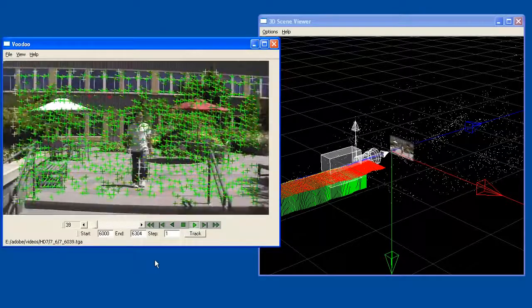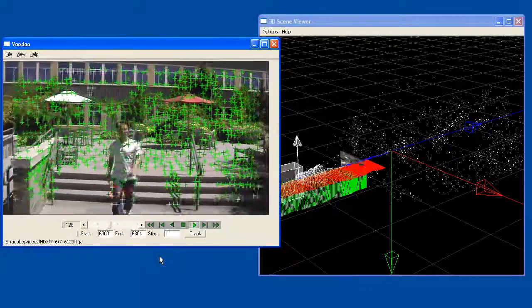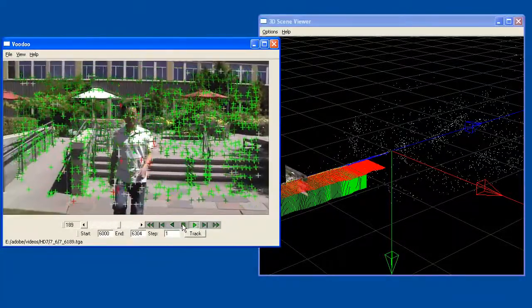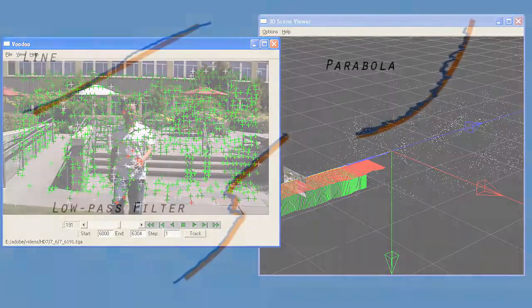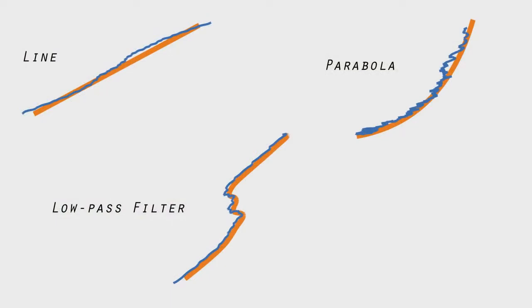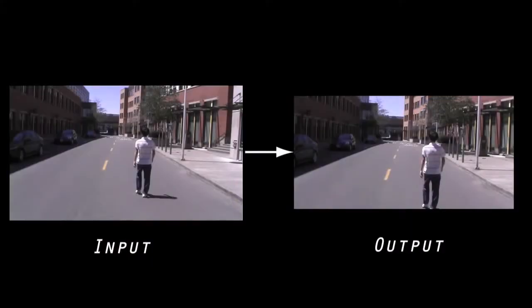We use Voodoo, a publicly available structure-from-motion system, to reconstruct the original 3D camera motion and a cloud of 3D scene points. Then we fit an idealized camera motion to the original, such as a line, a parabola, or just a low-pass filtered version of the original 3D trajectory. Then we try to simulate what the camera would have seen from this new camera path.